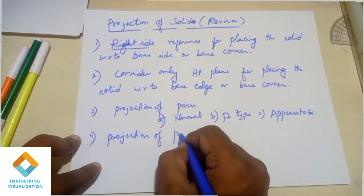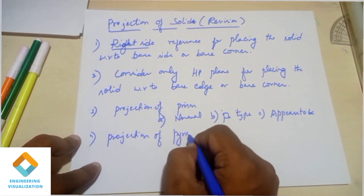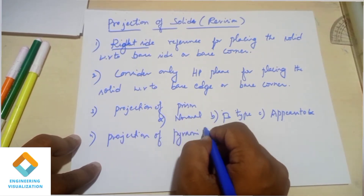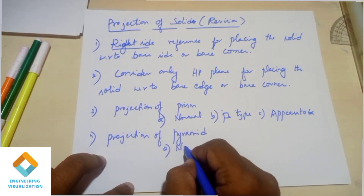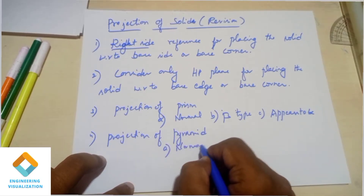Next, projection of pyramids — the next type of problem. This is normal type problem and bit angle.